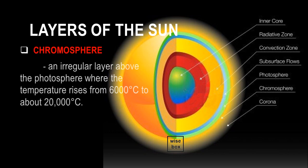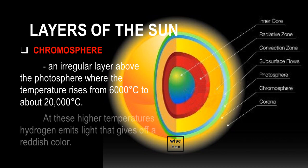The chromosphere is an irregular layer above the photosphere where the temperature rises from 6,000 degrees Celsius to about 20,000 degrees Celsius. At these higher temperatures hydrogen emits light that gives off a reddish color.